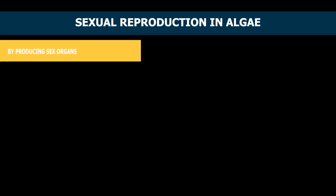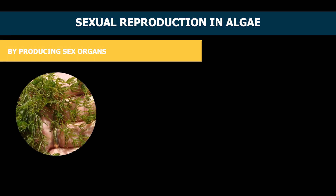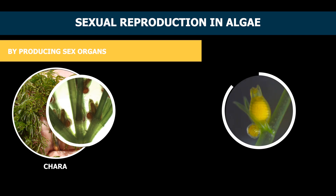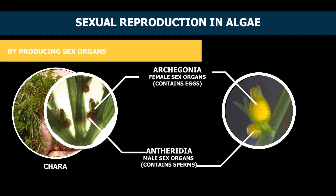2. By producing sex organs. Some algae do not have sex organs from the beginning but they grow them later. In such algae, the male sex organ is called antheridia and the female sex organ is called archegonia. Chara is a freshwater algae which reproduces by growing male and female sex organs.